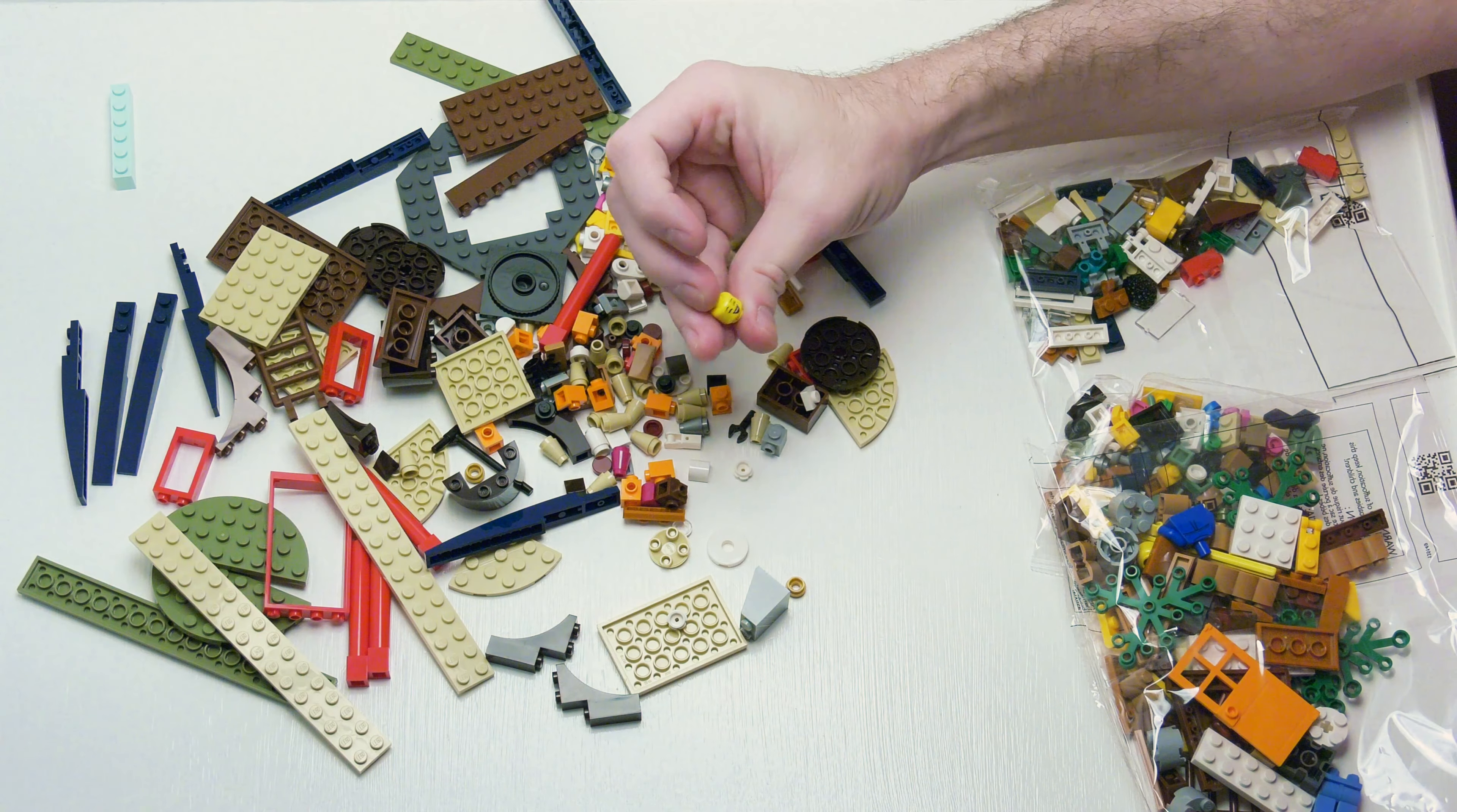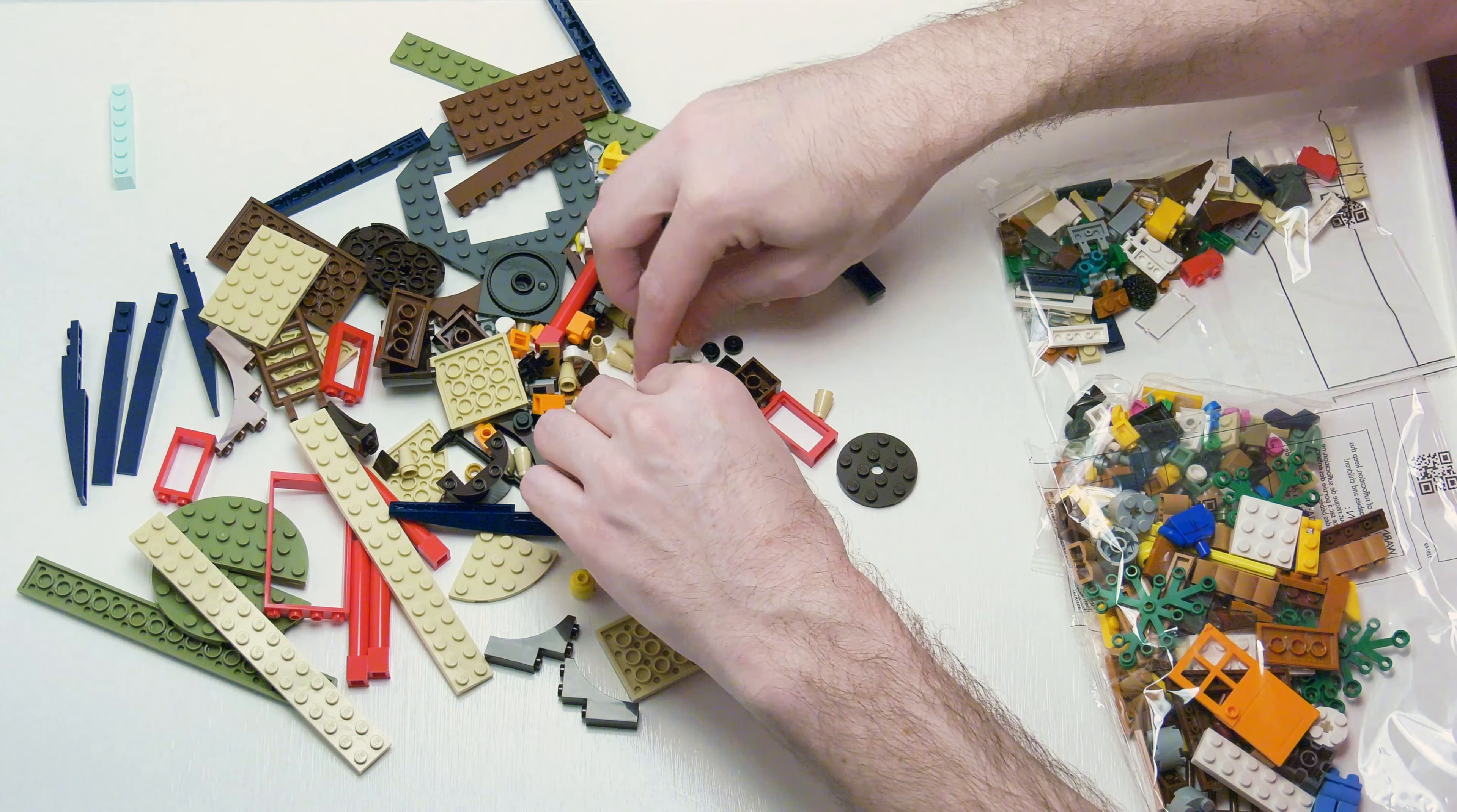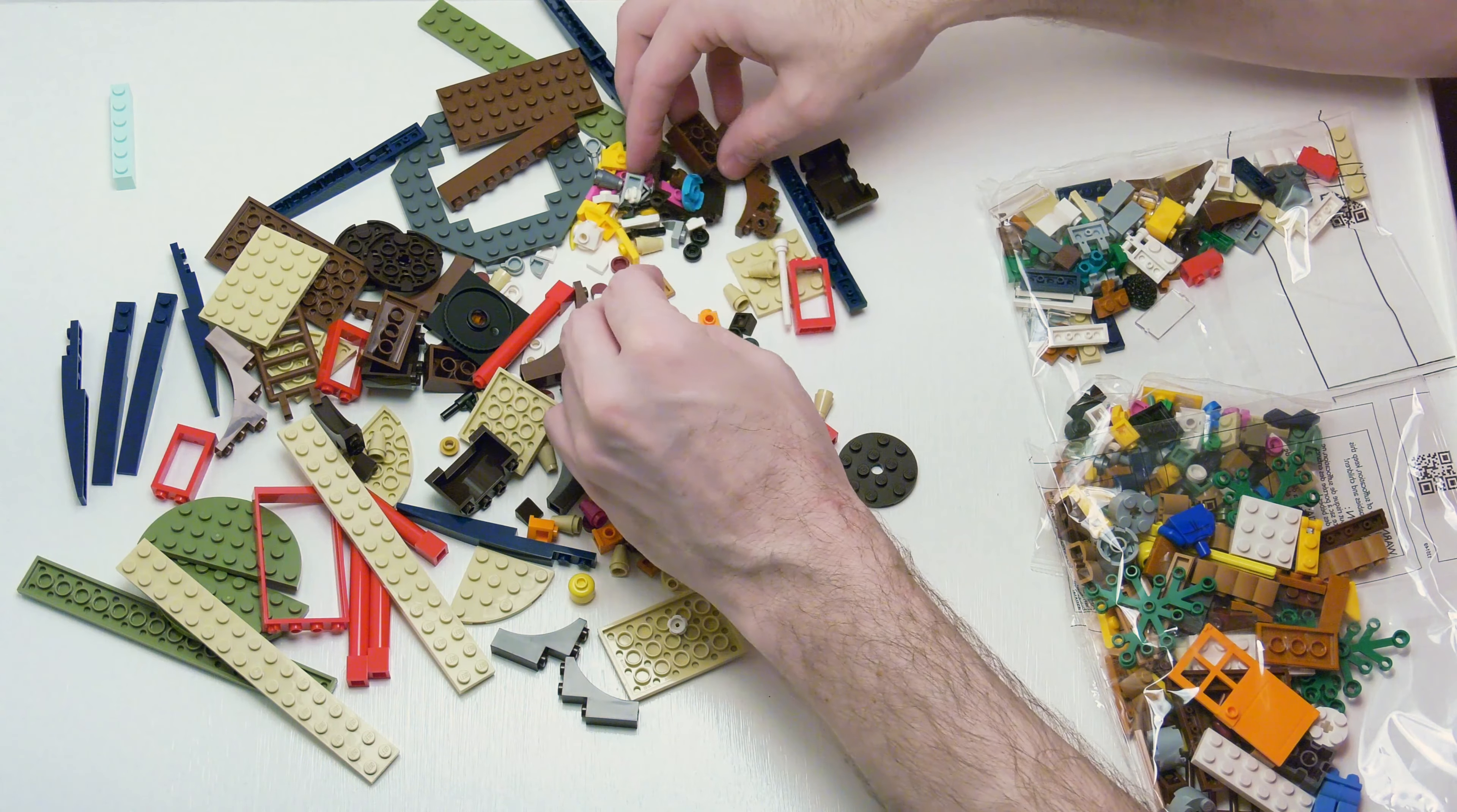We got some minifigures. Double-sided head. Anything else in here that's exciting? The reason why I'm opening this set up is because there's a few pieces that I need out of this for a few MOCs. Although you get a bunch of these 1 by 1 headlight bricks in bright orange.